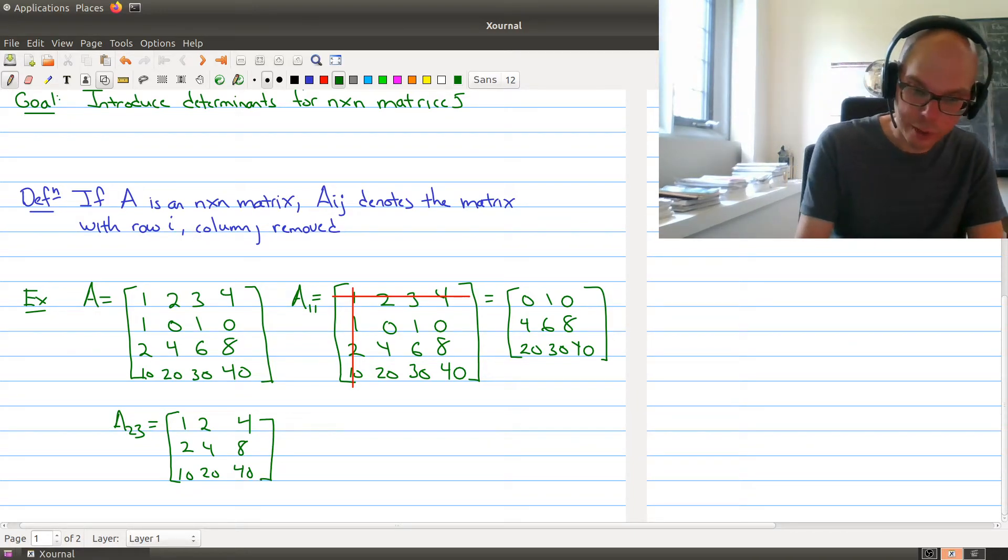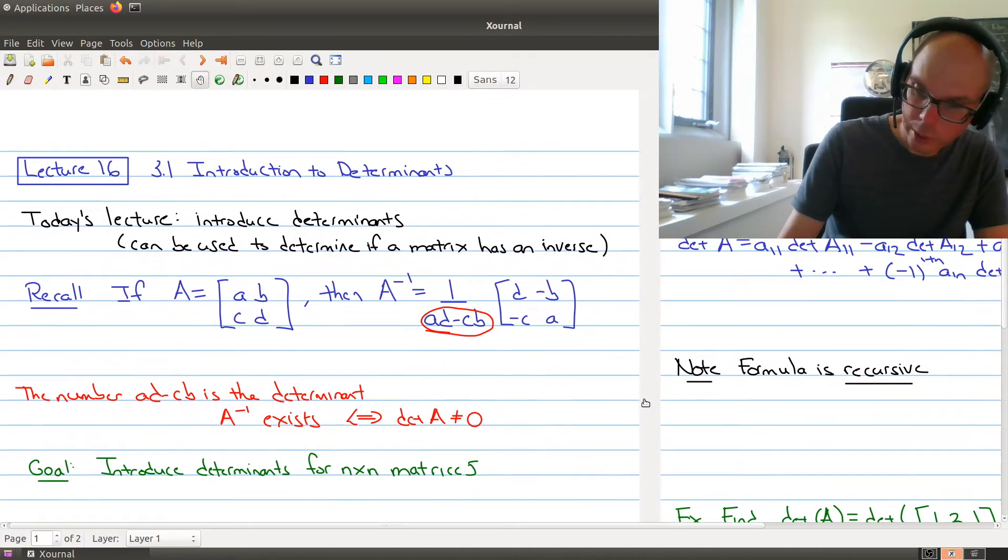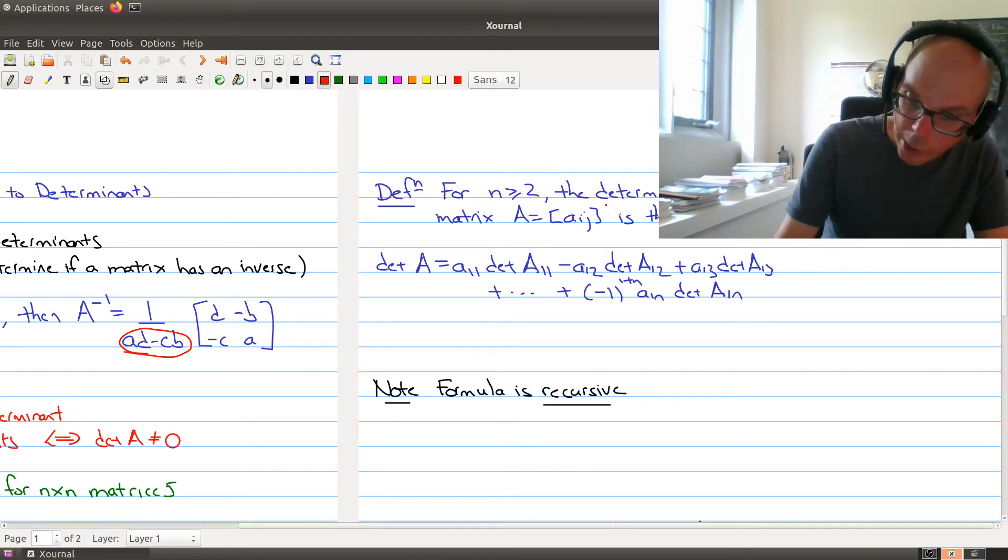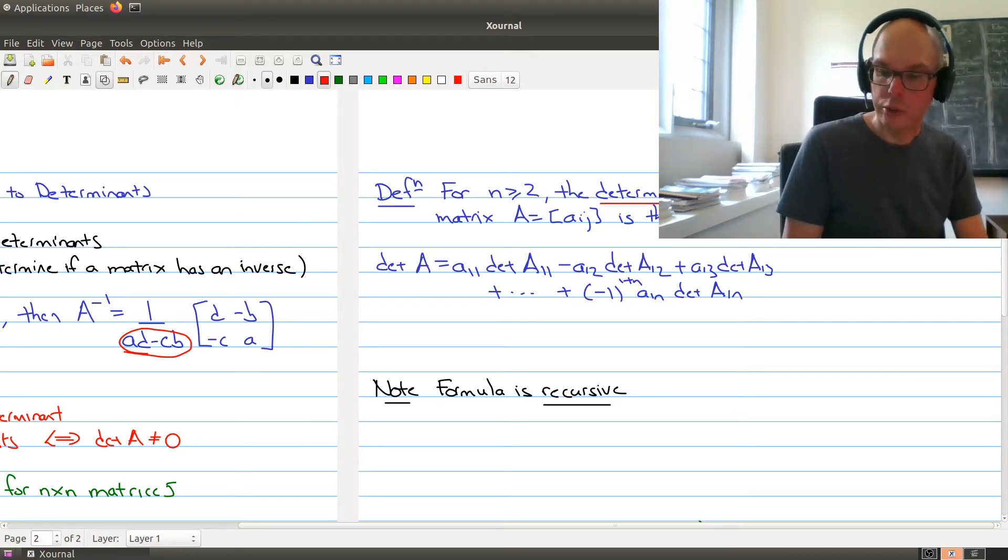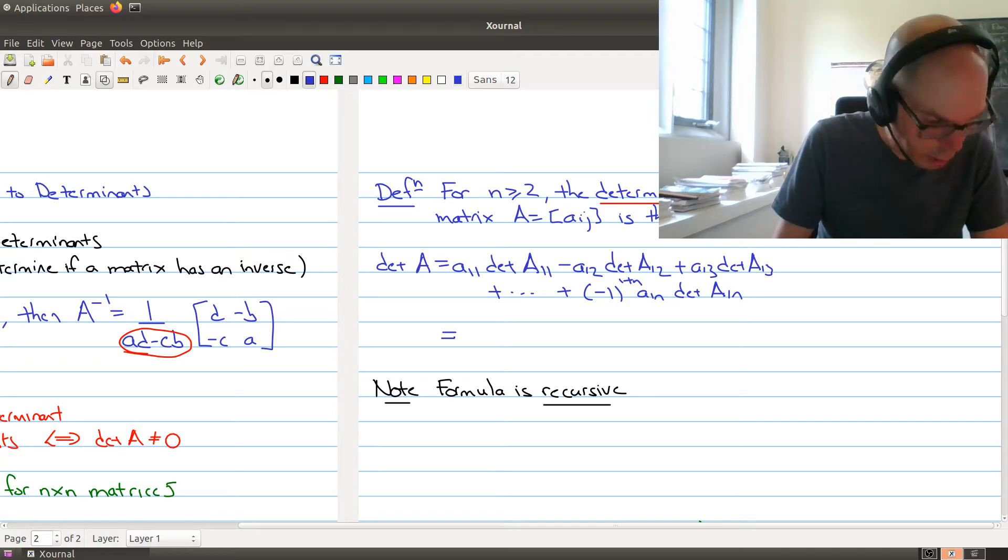Okay. Now we need this notation when we come to the definition of the determinant. So without much further ado, let's actually just give you the definition of the determinant. So if you have a matrix that's 2 by 2 or bigger, the determinant of the matrix is this following sum. So this means the entry A 1, 1 times the determinant of the matrix that you get by removing row 1 and column 1 minus the second entry in the first row times the determinant that you get by removing the first row in the second column. Then you add in the third entry in the first row times the determinant that you get by removing the first row in the third column, and so on. So we get plus, and what you're noticing is that we're getting an alternating sign.